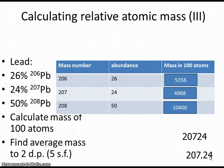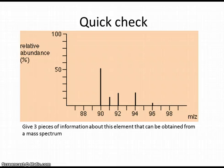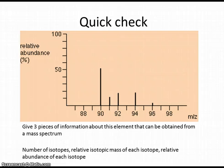That essentially concludes the introduction to the use of mass spectrometry data to find atomic masses. A couple of quick checks now — pause the video and give an answer to see whether you are right. Here's the mass spectrum you saw earlier. What are the three pieces of information you can obtain about the element from this mass spectrum? The answers are: the number of different isotopes, the relative isotopic mass of each one, and the relative abundance of each of the isotopes.